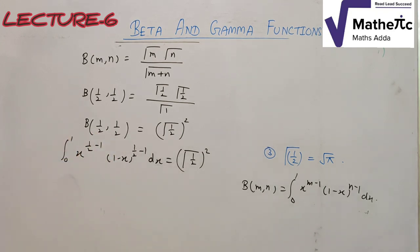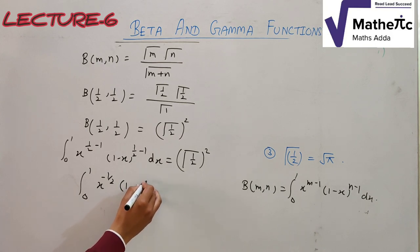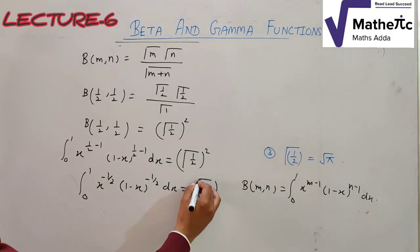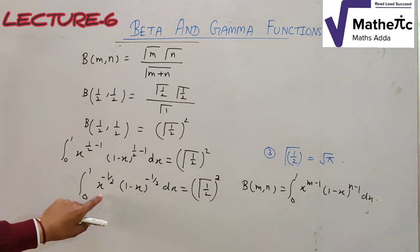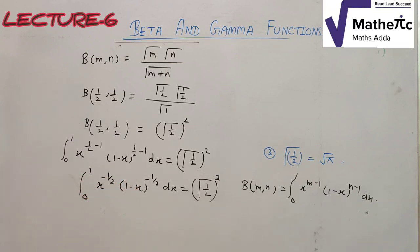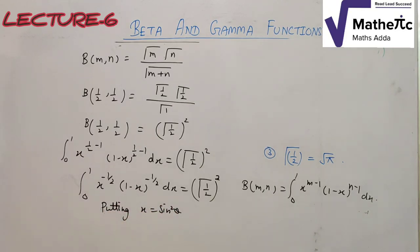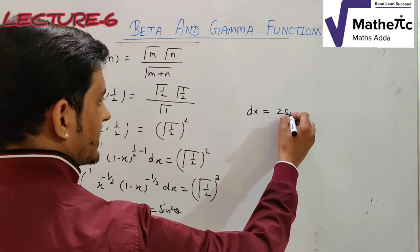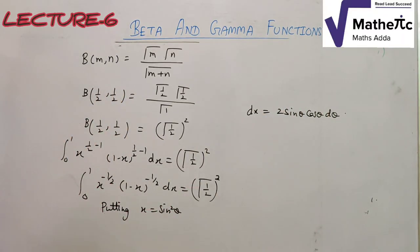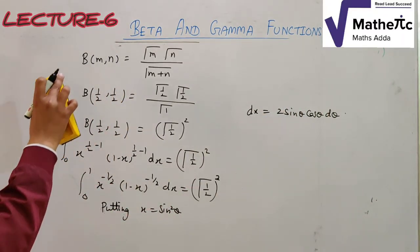Now use the integral definition of β(m,n) = ∫₀¹ x^(m−1)(1−x)^(n−1) dx. With m = n = 1/2, β(1/2, 1/2) = ∫₀¹ x^(−1/2)(1−x)^(−1/2) dx = [Γ(1/2)]². To evaluate the left side, put x = sin²θ, so dx = 2 sinθ cosθ dθ.